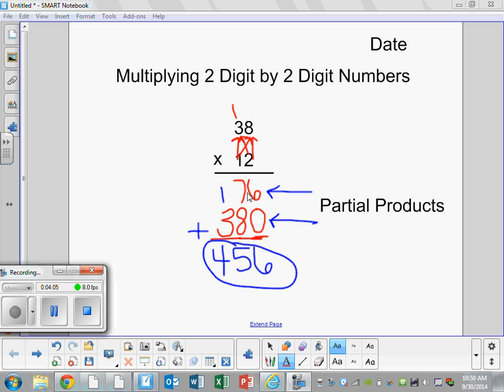Hopefully you have a better understanding of how to multiply two digit by two digit numbers. The main thing you need to remember is you have to put that zero down here as your placeholder.